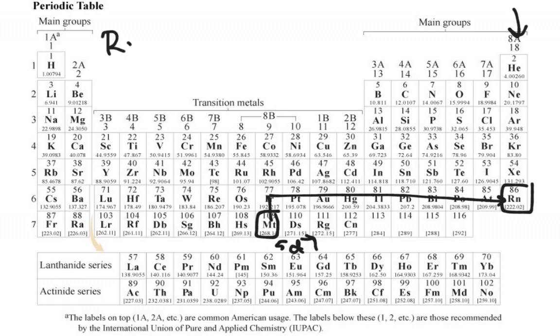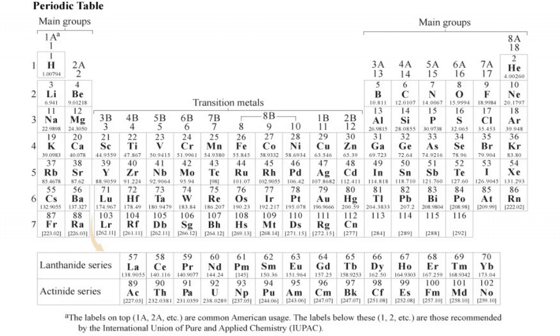So I would go Rn, and I would put that in brackets. And then I would just continue with the row that the element I'm interested in is on. And so I'd go 7S2, 5F14, 6D7. Instead of that whole long mess that we had before, that's the shortcut there. Let's do one more and then I'll call this one done.